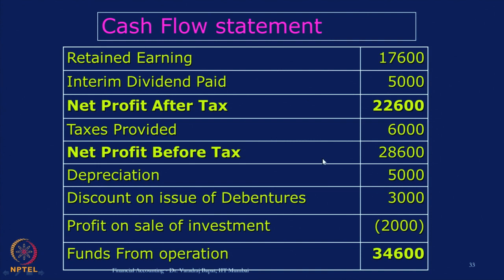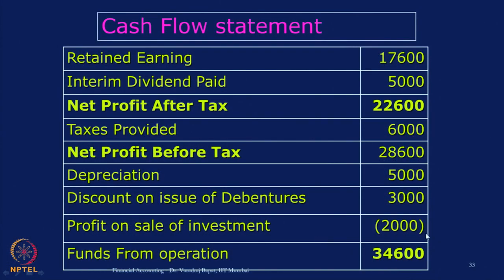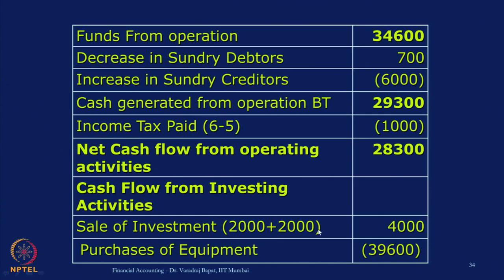The first part is operating activities. There is a specific format, so please go through the format two or three times. We calculate net profit after tax, then net profit before tax, and then do adjustments for certain items. To calculate NPAT, we started with retained earnings, add interim dividend, add taxes provided — we got NPBT. Then depreciation and discount on debentures were added. Keep in mind these are non-cash items. Then profit on sale of investment is to be reduced. So we get funds from operations: 34,600.